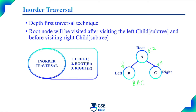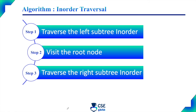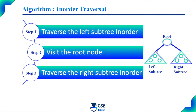This inorder traversal is a depth-first traversal technique. Algorithm for inorder traversal: Step 1 — traverse the left subtree in order, that is, it will visit all the nodes in the left subtree as per inorder traversal: first left child, then root node, then right child. Step 2 — visit the root node.